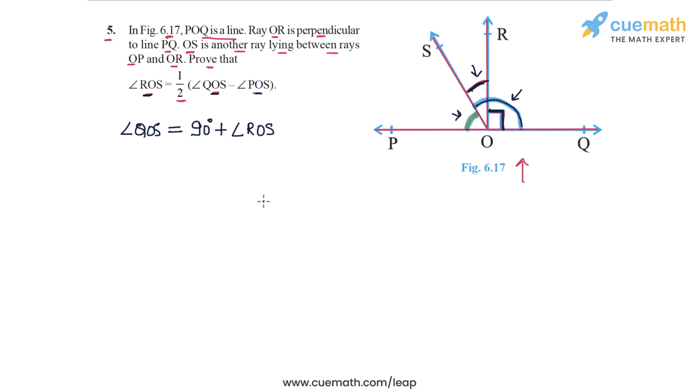Now similarly, if I take angle POS, this angle marked in green, how can I write this in terms of angle ROS? Well, angle POS equals the whole angle POR minus angle ROS. So angle POS can be written as 90 degrees minus angle ROS.